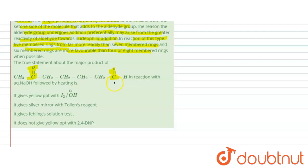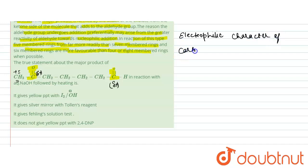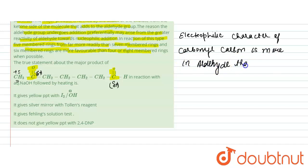The aldehyde part undergoes nucleophilic addition because the delta positive character — the electrophilic nature — of the aldehyde carbon is high. In the case of the ketonic carbon, the electrophilic nature is low because of the presence of the CH3 group, which shows a +I effect and hence decreases the electrophilic character of the ketone carbon. Since there is no such +I effect in aldehyde, the electrophilic character of the carbonyl carbon is more in aldehyde than in ketone.